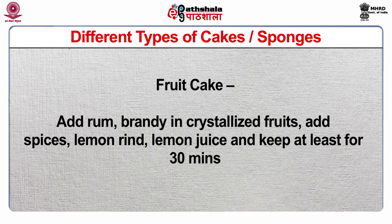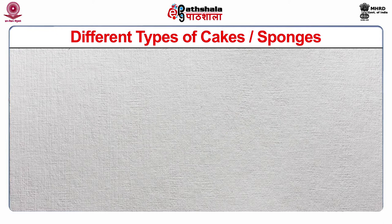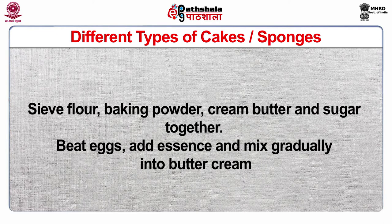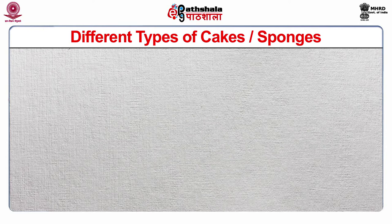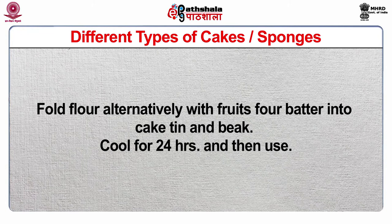Fruit cake: add rum or brandy to crystallized fruits, add spices, lemon rind and lemon juice and keep for at least 30 minutes. Sieve flour, baking powder, cream butter and sugar together, beat eggs, add essence and mix gradually into butter cream. Fold flour alternately with fruits for batter into cake tin and bake. Cool for 24 hours and then use.